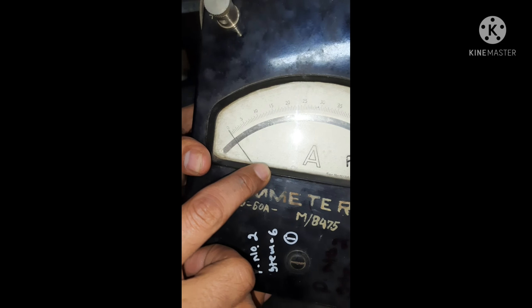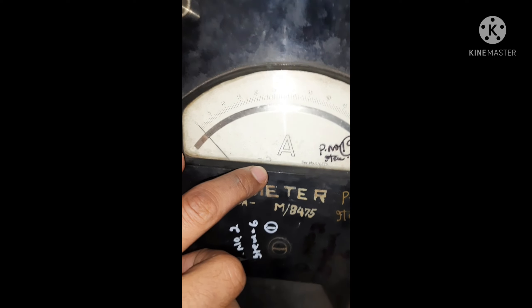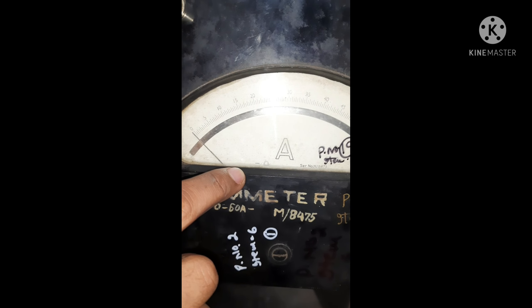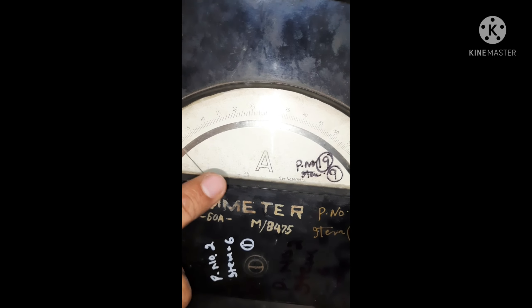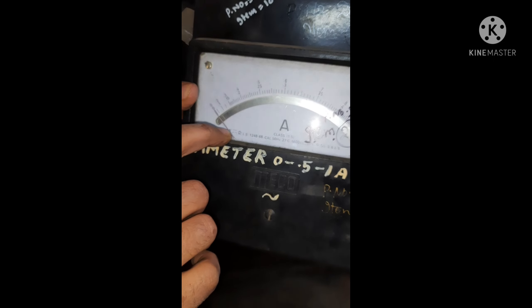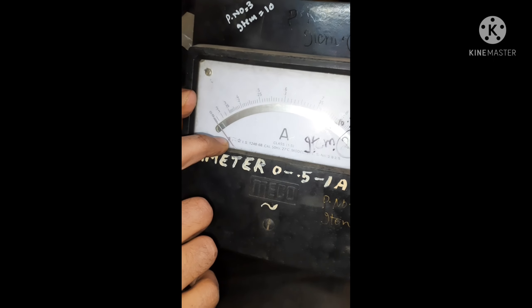This is a DC instrument. Moving coil should be a dash. This will be a DC instrument. This is an AC emitter.